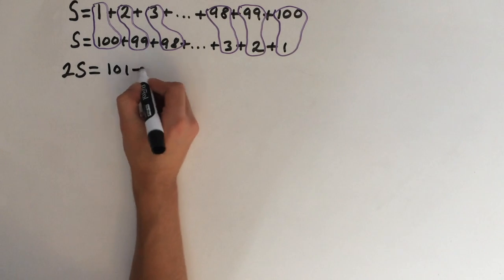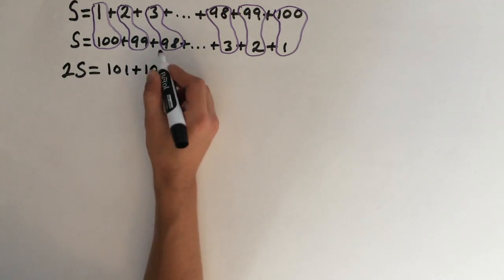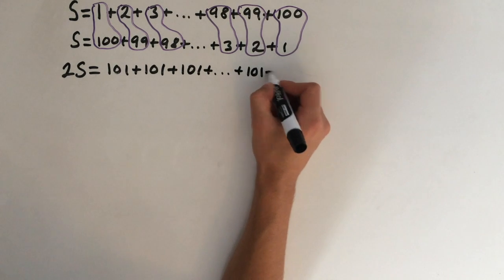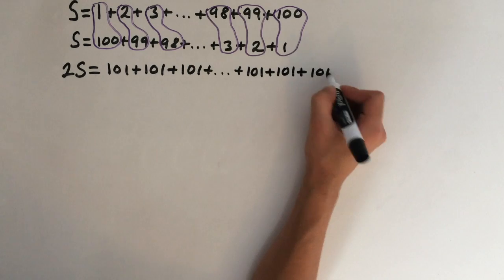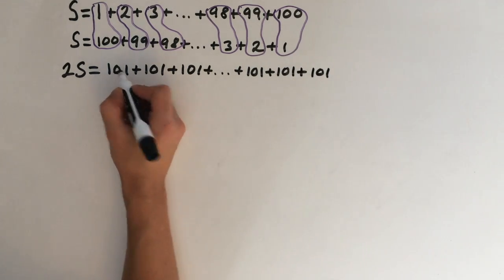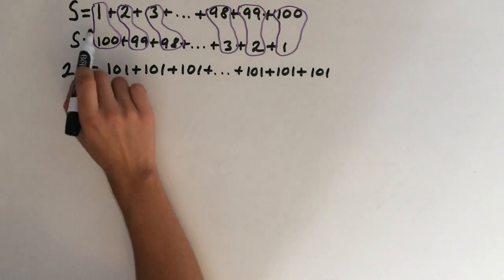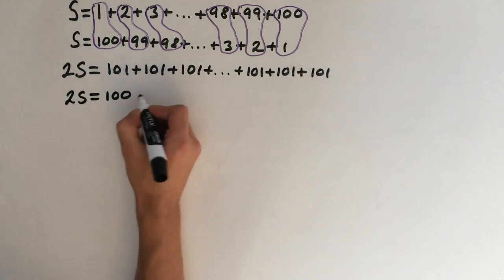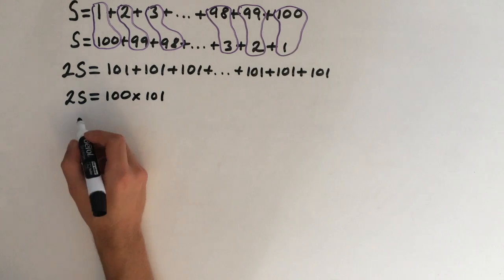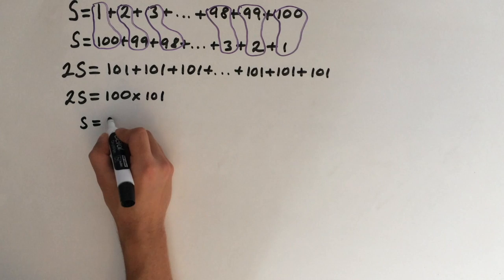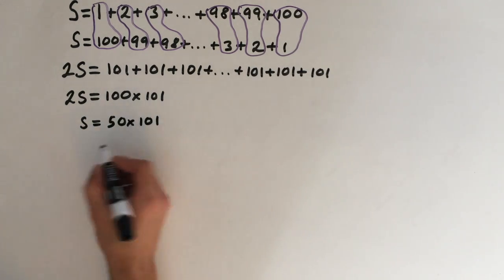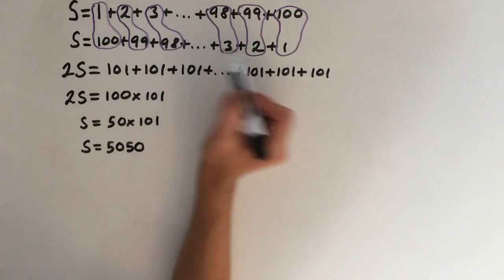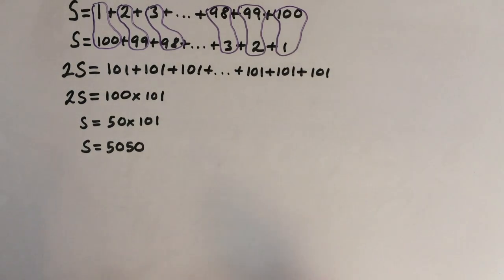Adding the pairs: 1 plus 100 gives 101, 2 plus 99 gives 101, 3 plus 98 also gives 101. Every term is going to be 101. Since we defined the series from 1 to 100, there are 100 terms, so 2S equals 100 times 101. Solving for S by dividing by 2: 50 times 101 gives 5050. So the sum of all numbers from 1 to 100 is 5050.